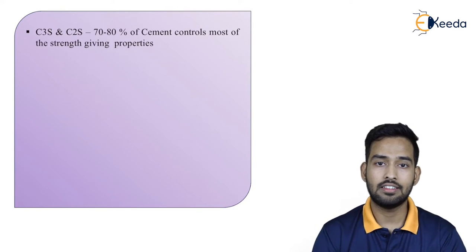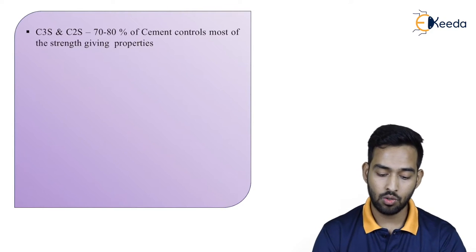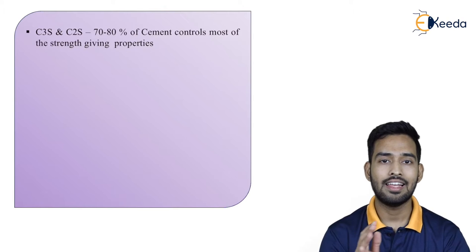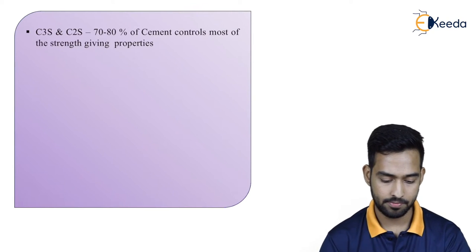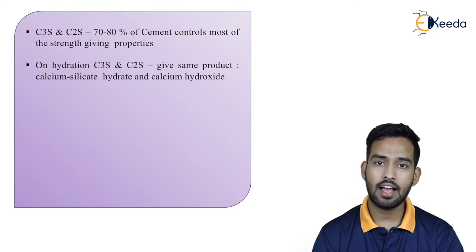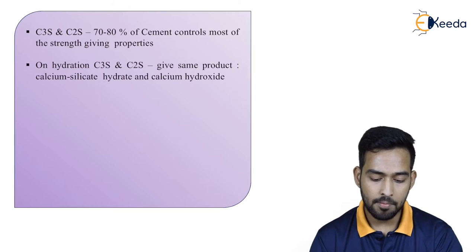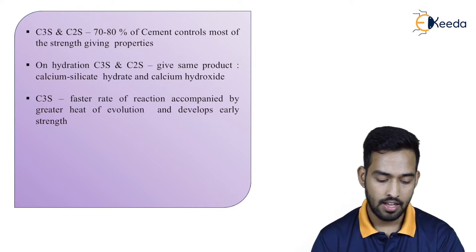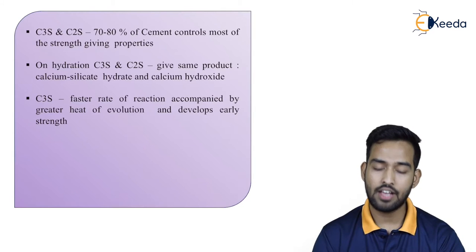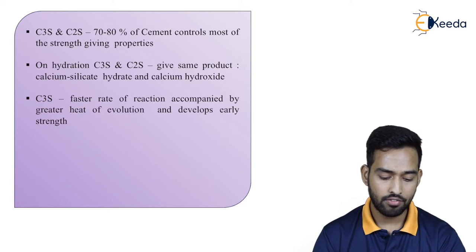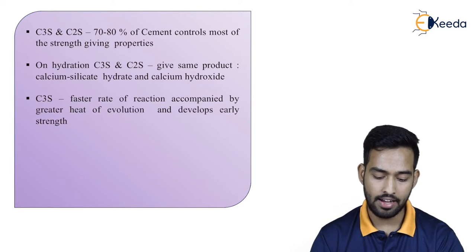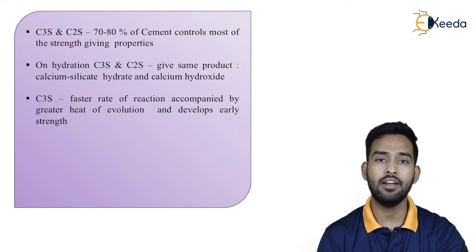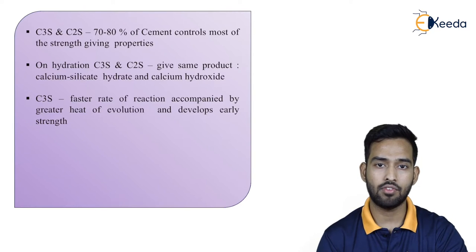C3S and C2S are generally 70–80% of cement and control most of the strength-giving properties. On hydration, C3S and C2S give the same products: calcium silicate hydrate and calcium hydroxide. C3S has a faster rate of reaction, accompanied by greater heat of evolution, and develops early strength. So C3S is responsible for early strength.